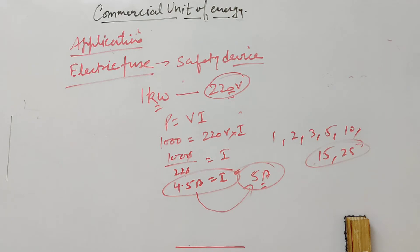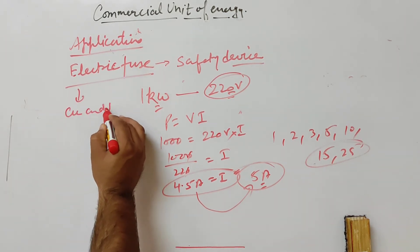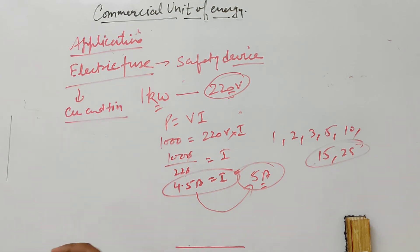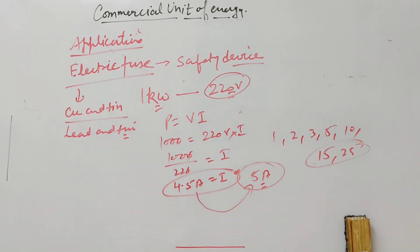For fuse wire you can use alloys with lead or tin. Basically this is a safety device for the circuit to save the circuit. If the current exceeds the limit, the fuse will melt and break down the circuit.